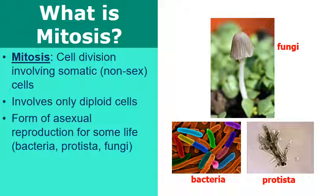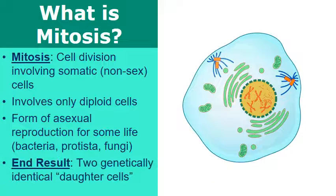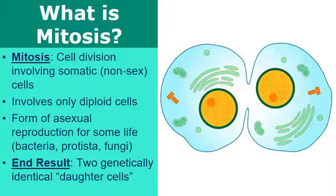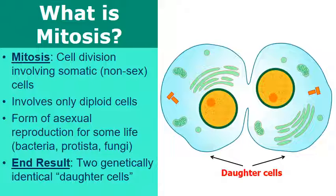In some organisms, mitosis is a form of asexual reproduction. Bacteria, protists, and fungi multiply through variations of mitosis, producing another individual organism. The end result of mitosis is that we start with one cell and ultimately create two daughter cells — genetically identical copies of one another.